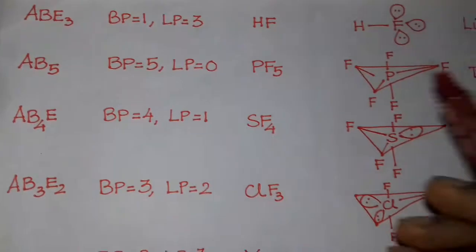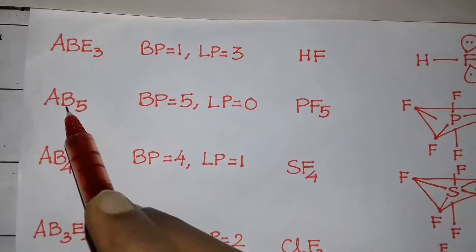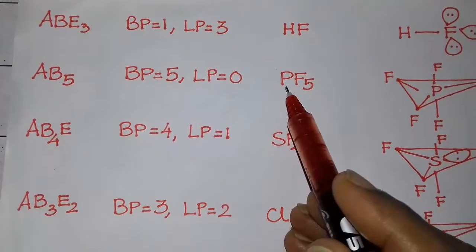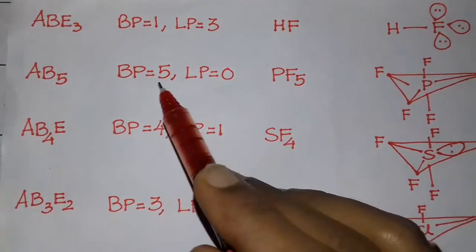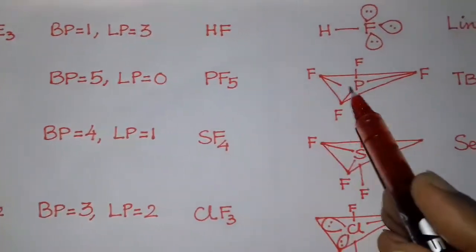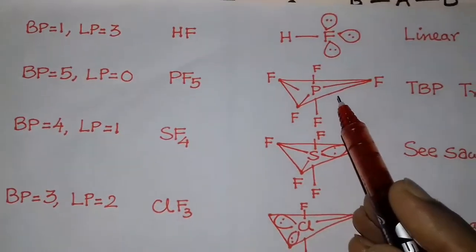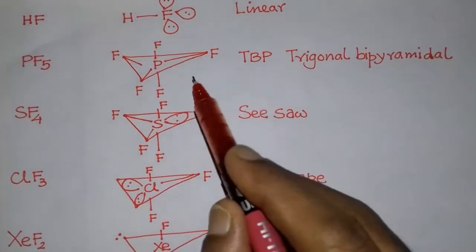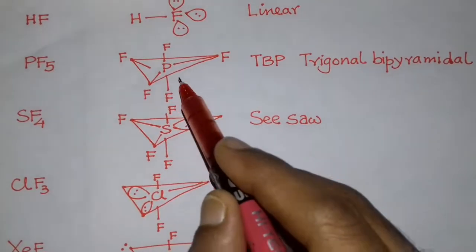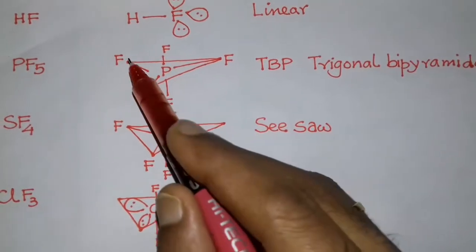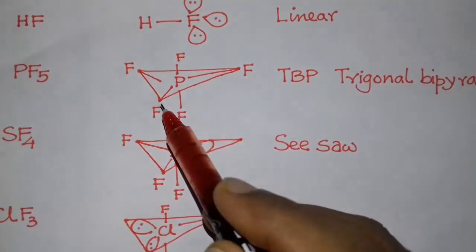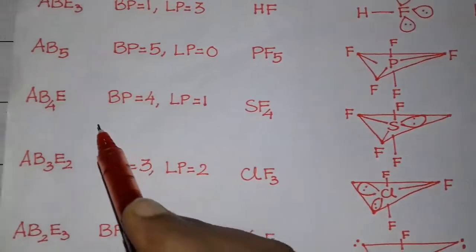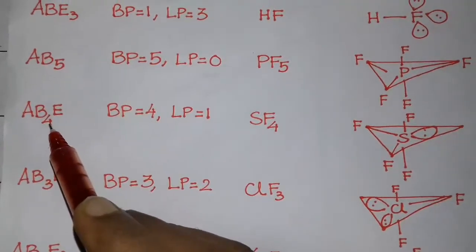Now H value is 5 for AB5, in which phosphorus has no lone pair — bond pair is 5 and lone pair is 0. It is TBP (trigonal bipyramidal) in shape. Two fluorine atoms are in axial positions and three fluorine atoms are in equatorial positions.